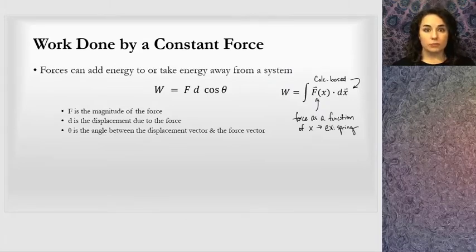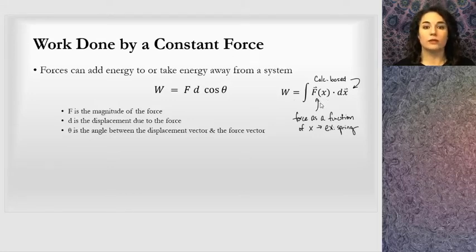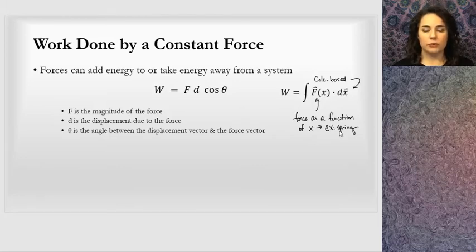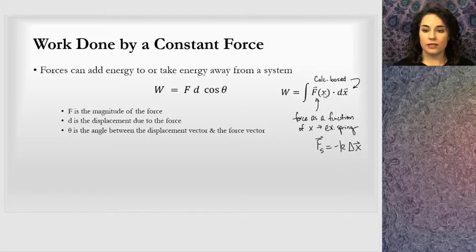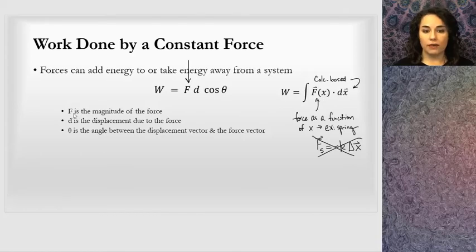Work done by a constant force is a pretty easy equation. You can see the calc-based version over here, which I'm not covering, but I wanted to introduce that in the calc-based version we don't limit the force to be constant — force is a function of displacement, of position. For example, the force from a spring is negative K delta X, where there's this displacement vector. That's not the case we're looking at for work done by a constant force. We want the force to not be changing at all, and F in the equation is the magnitude of that force, which will be constant for the situation.